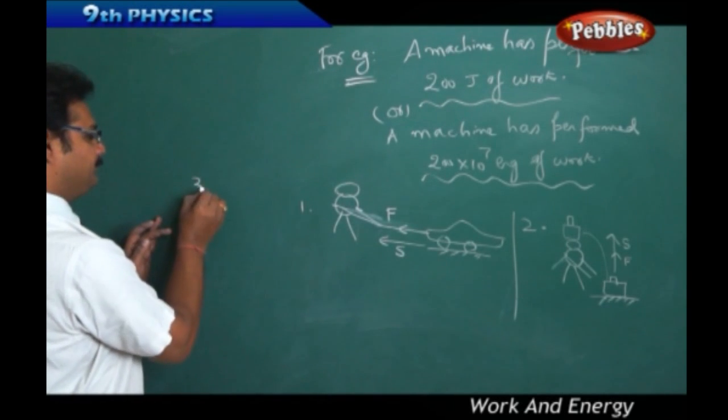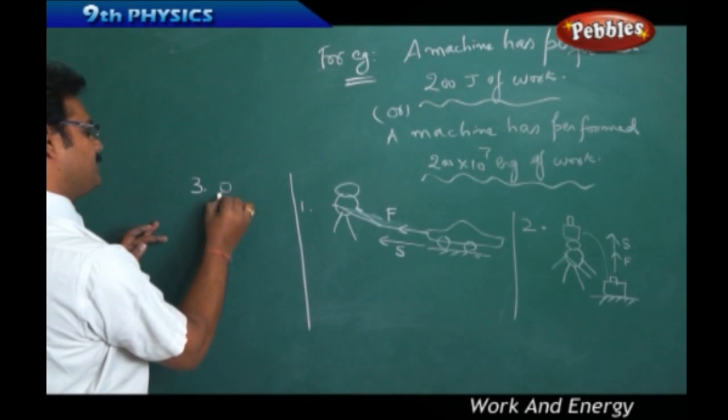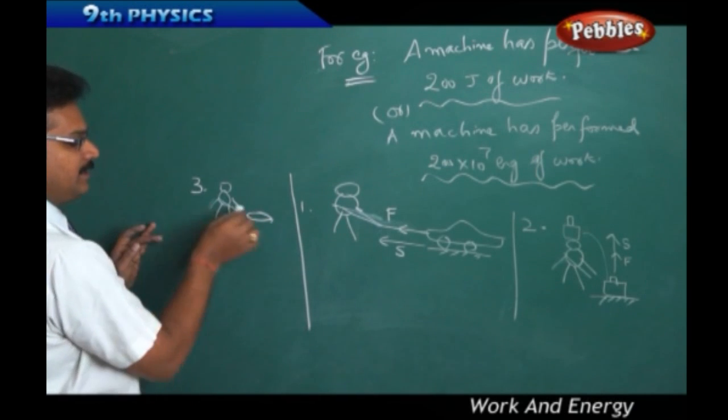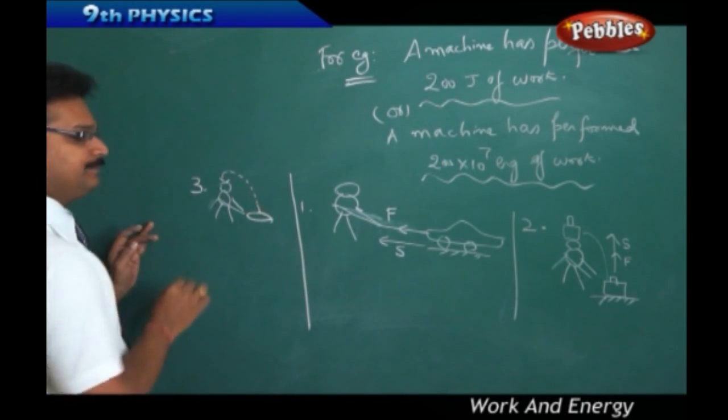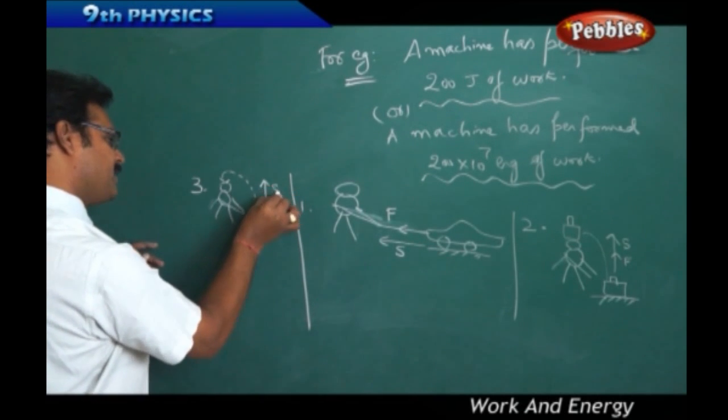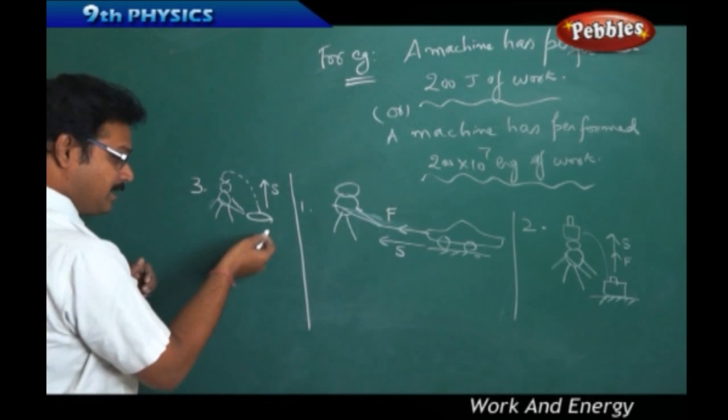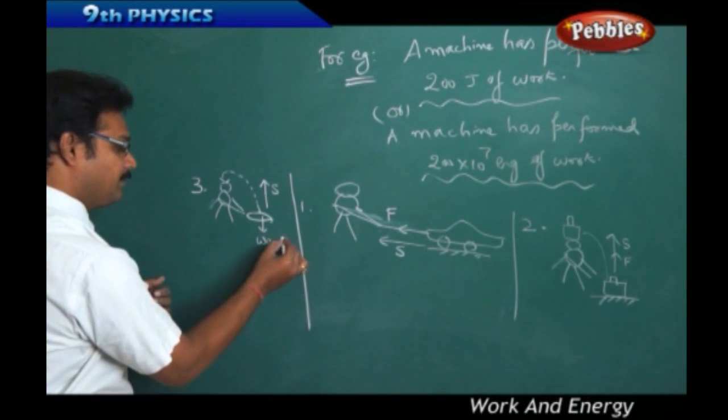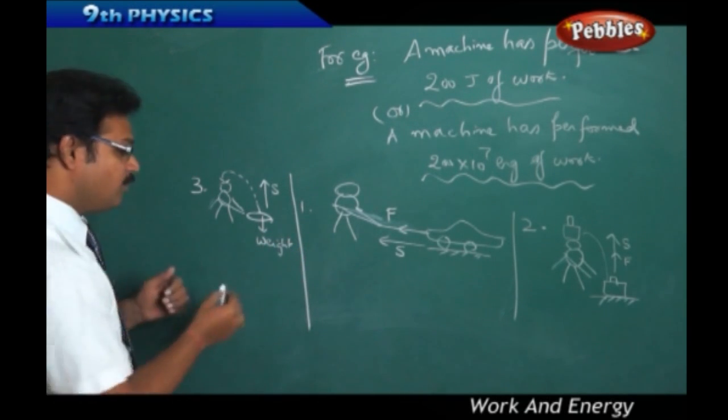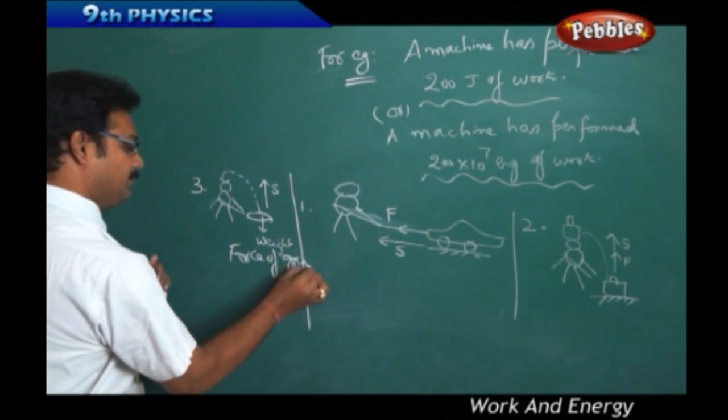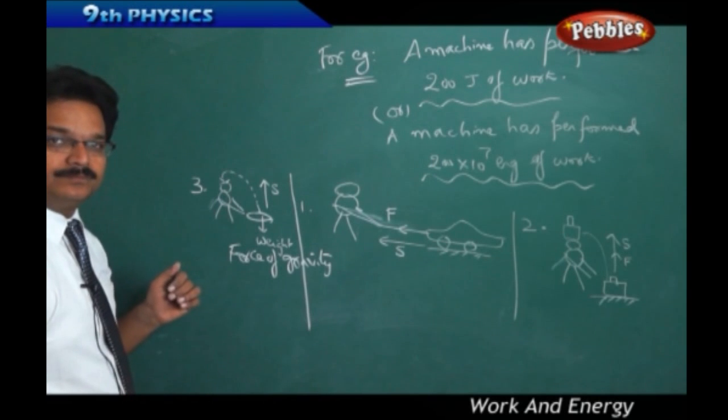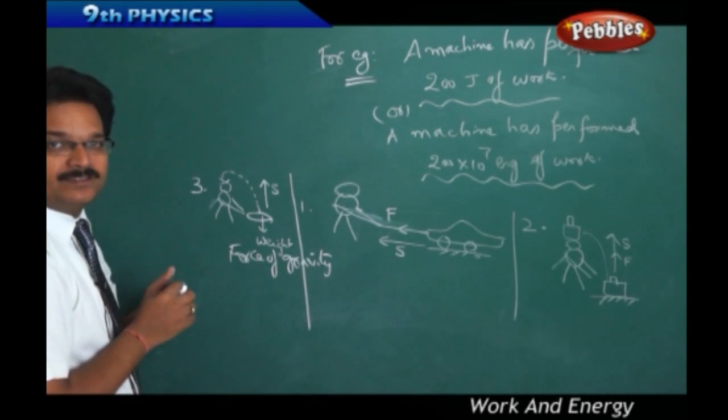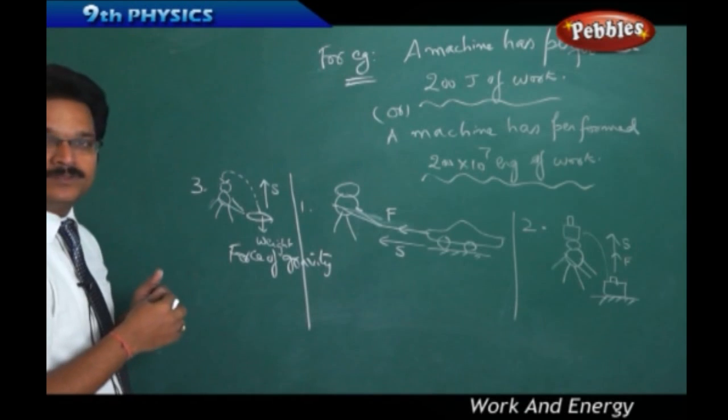Now, take third example. The person, again, lifting a cement bag. He lifted and kept it on his head. And, here, the displacement is in the upward direction again. And, you see, when you want to lift the cement bag in the upward direction, cement bag has weight acting downwards. This weight is also called force of gravity by the earth. Now, I can say that there is work done by the person against the force of gravity to lift the cement bag in the upward direction. This is also a work.